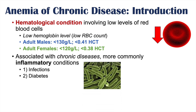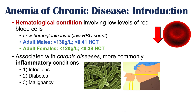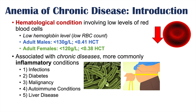Diabetes is also a common chronic condition that can lead to anemia of chronic disease. Malignancy — having a cancer — can also cause it. Autoimmune conditions like rheumatoid arthritis and lupus can all lead to anemia of chronic disease, as they are general systemic inflammatory conditions.